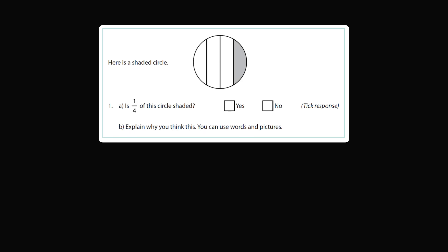Here is a shaded circle that's divided by three vertical slices. They are equally spaced across the diameter of the circle. Here's a question. Is one-fourth of this circle shaded? Yes or no? Explain why you think this. You can use words and pictures.